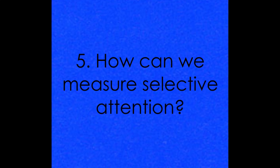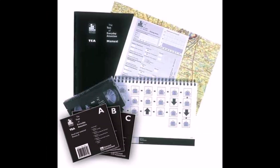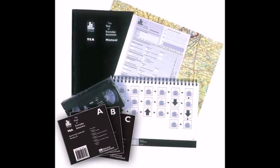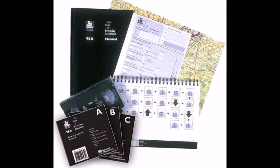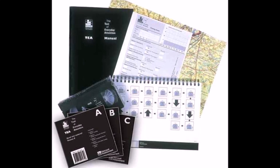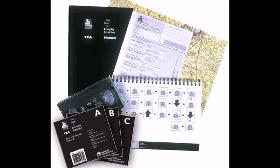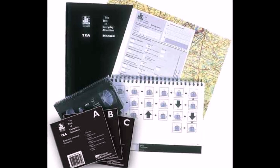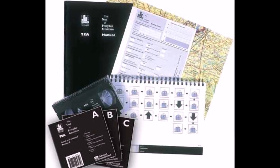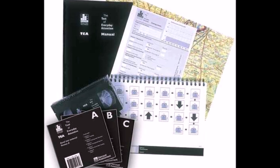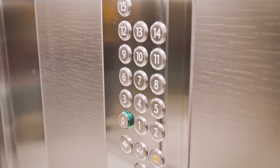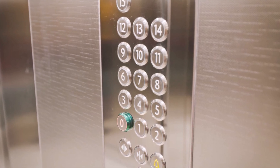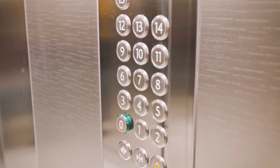How can we measure selective attention? Selective attention can be measured with the Test of Everyday Attention by using everyday materials. The test, which was founded in 1994, can be conducted on people between the ages of 18 to 80 and comprises 8 subsets which represent everyday tasks. An example of a subset is elevator counting, where you listen to a series of tones and must indicate a floor number.